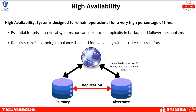High availability describes systems designed to remain operational a very high percentage of the time. It can be architected in many ways: load balancing, cross-cloud region data replication, first-hop redundancy protocols in network architecture, or link aggregation and NIC teaming. Essentially, high availability refers to any configuration, scheme, or architecture implemented to ensure that our network, data, and application services remain online even in the event of failures.